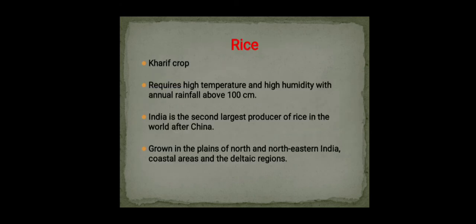There are three types of crops: rabi, kharif, and zaid crops. Rice is a kharif crop which requires high temperature and high humidity, with annual rainfall of over 100 cm.